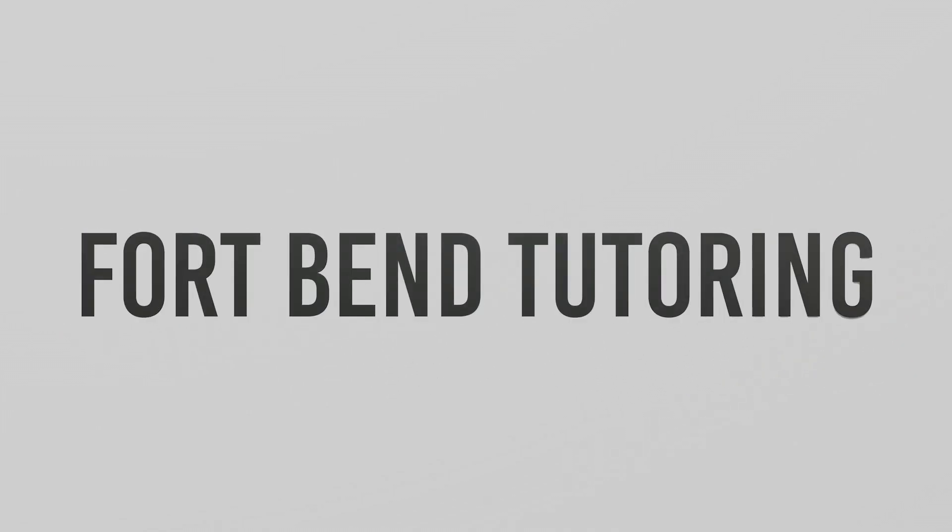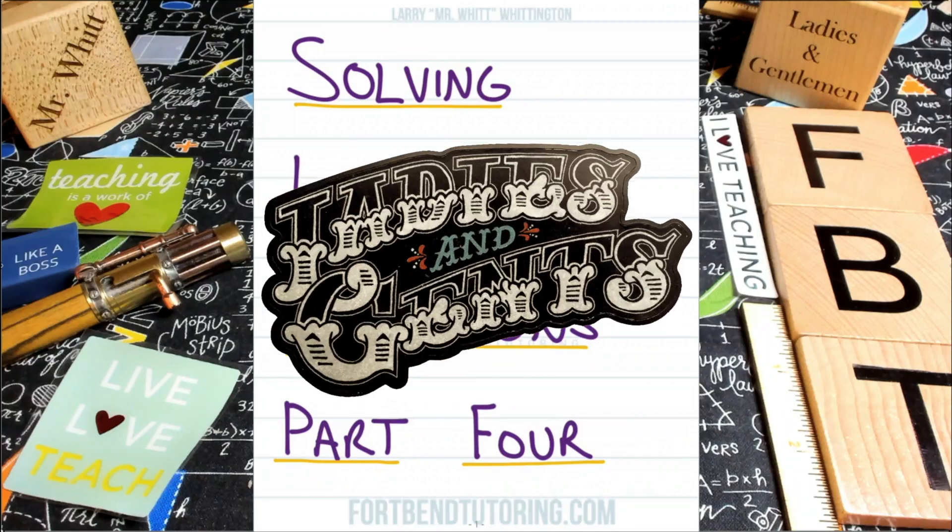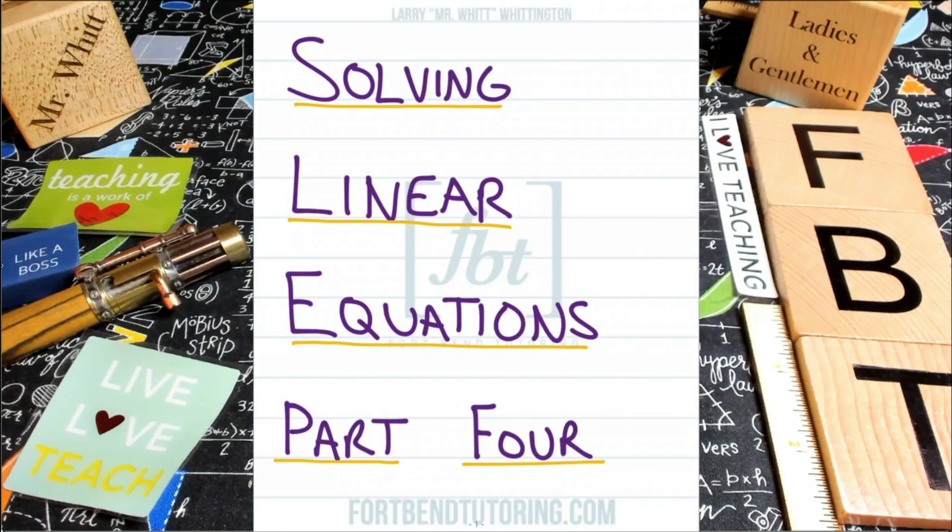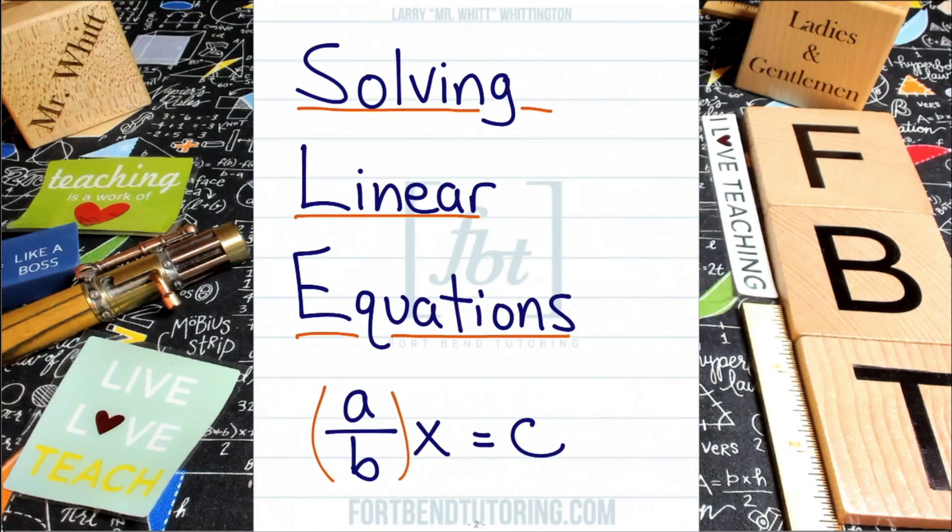It's time to get your arrows popping! Ladies and gentlemen, this is Mr. Witt with Fort Bend Tutoring, and today's tutorial is Solving Linear Equations Part 4. That's right! Part 4 is dealing with solving linear equations of the form A over B times X equals C. You may be wondering, well, what is this form Mr. Witt? I'll tell you. It is a form that I actually love a lot, and the reason why is because I'm going to show you guys 4 different ways to solve a linear equation that is in this form. Are you ready? Let's check it out.